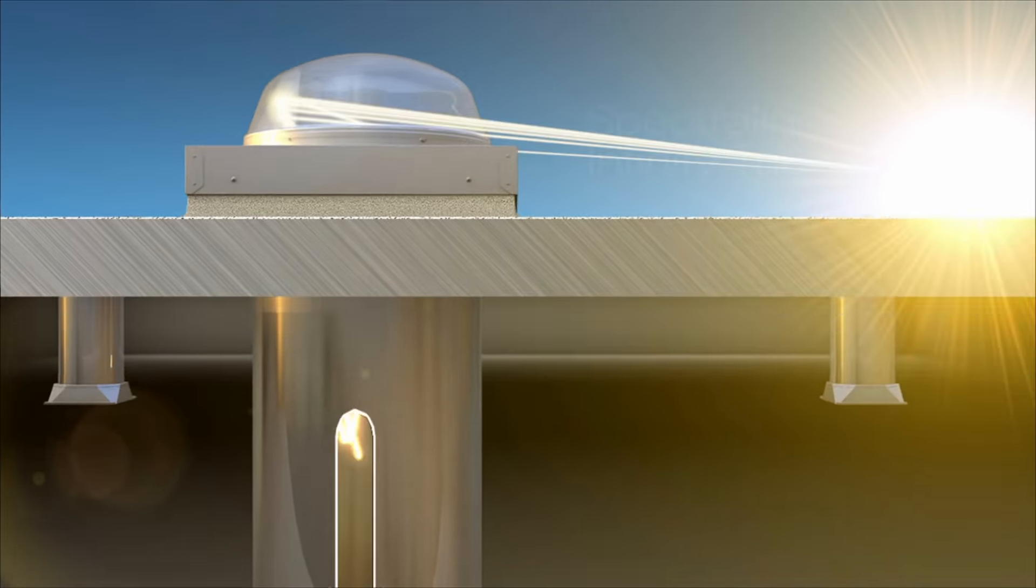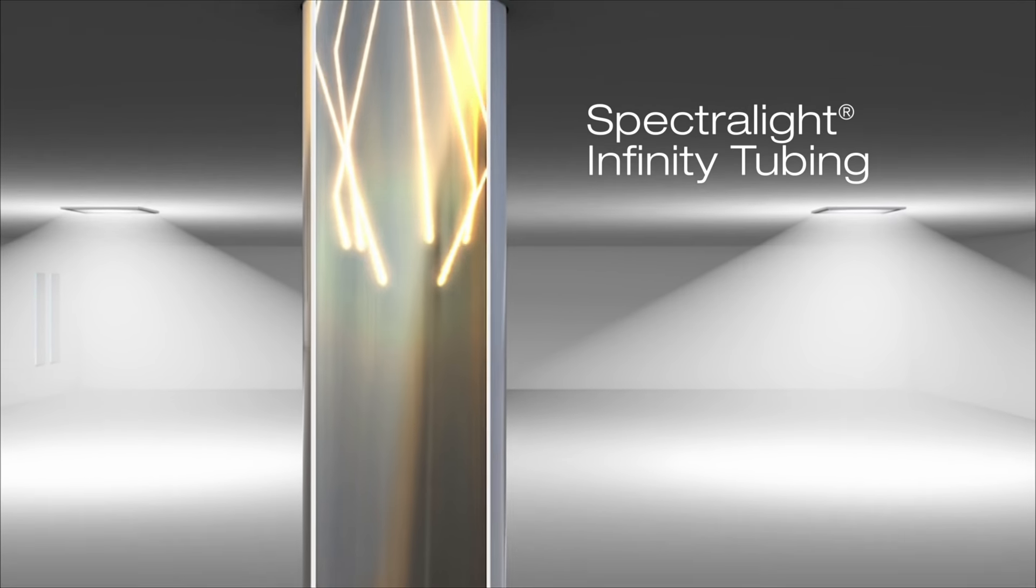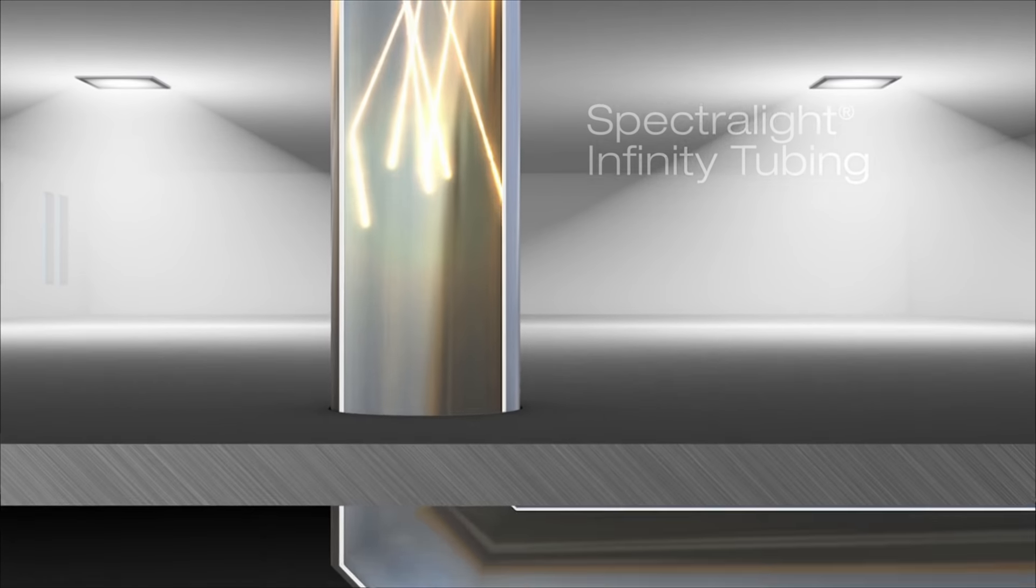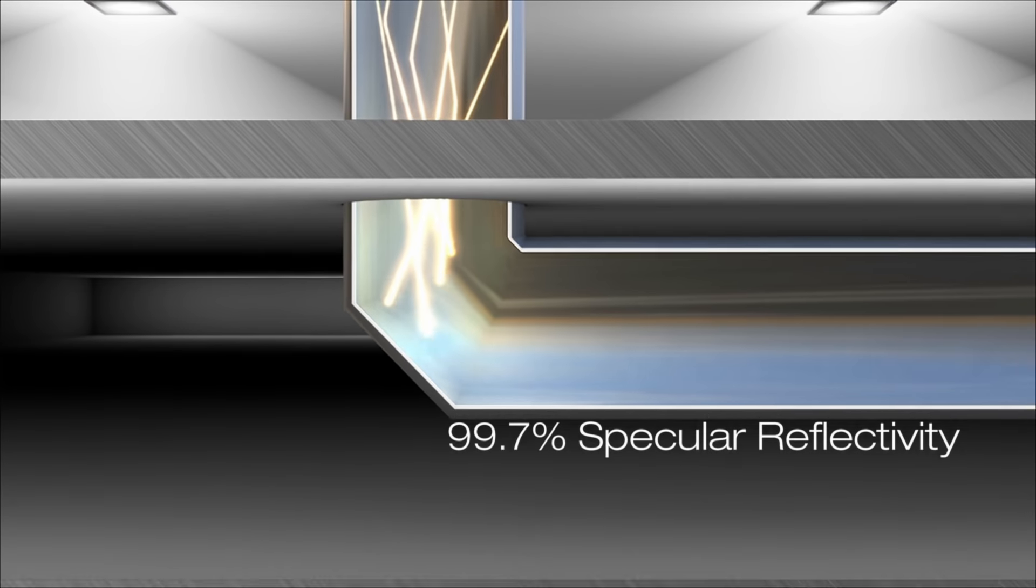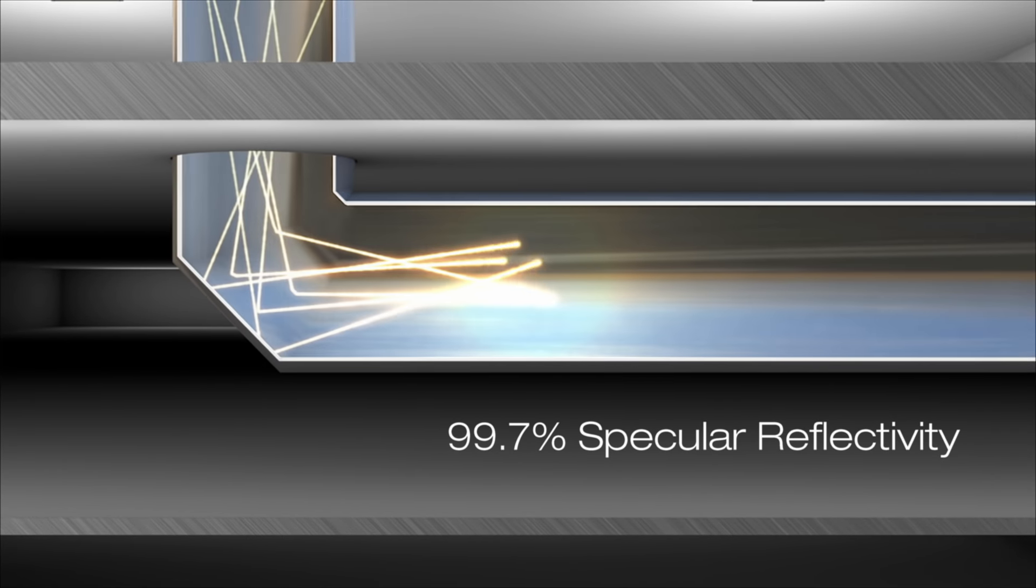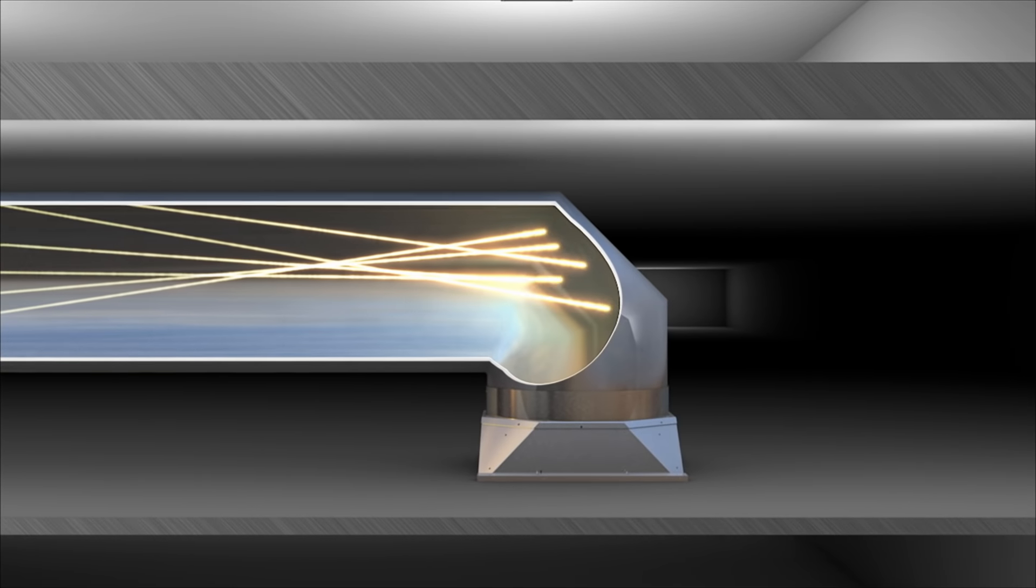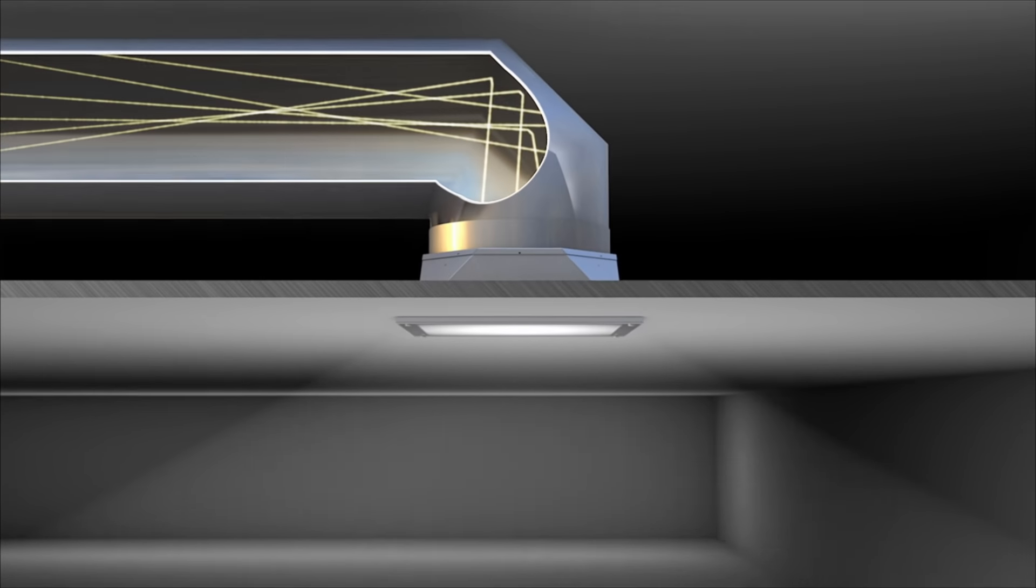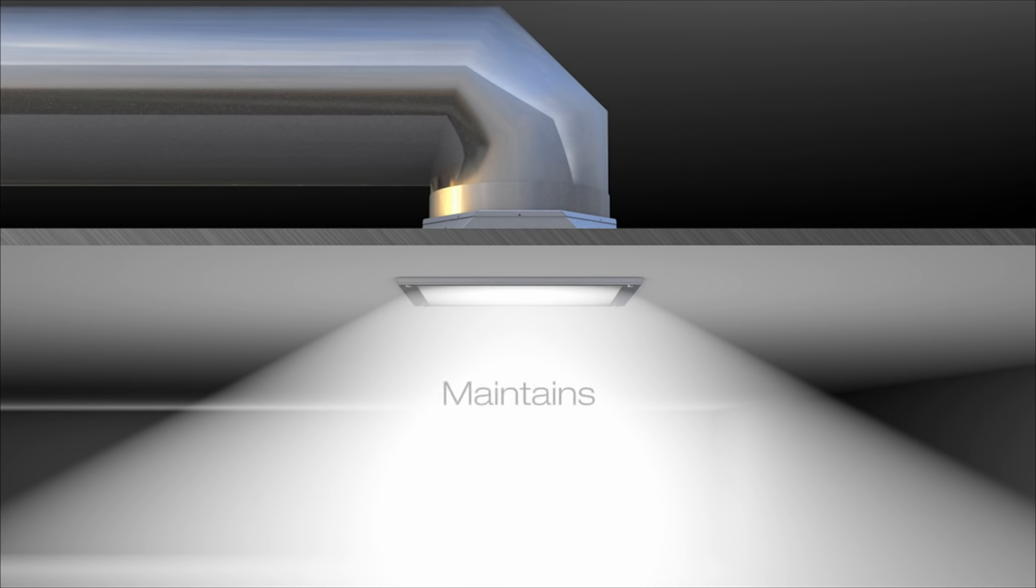The captured daylight travels through our Spectralight Infinity Tubing, the world's most reflective material, providing up to 99.7% specular reflectivity for the greatest daylight transfer available. This allows for lengthy tube runs and turns up to 90 degrees to bring daylight to lower floors without noticeable loss of brightness or color purity.